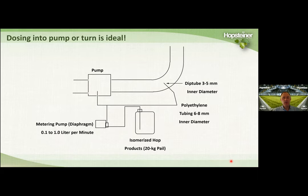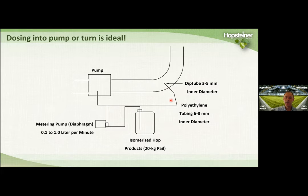For post-fermentation hop addition, ideally dose the products into a pump where you have lots of mixing or into the turn of a pipe where you have a lot of turbulence. These products are usually packaged in 20 kilo plastic pails. We recommend a metering pump that can dose about 100 mL to 1 liter per minute. Tubing needs to be very small — we recommend an inner diameter of 6 to 8 millimeters. You'll want a dip tube going into the beer line with an inner diameter of about 3 to 5 millimeters.